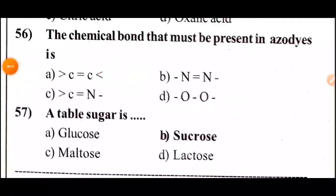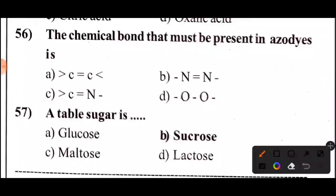Next question: The chemical bond that must be present in an acid is — 5 seconds. Answer: Option B — (minus N equal to N minus). The chemical bond that must be present in an acid is Option B.